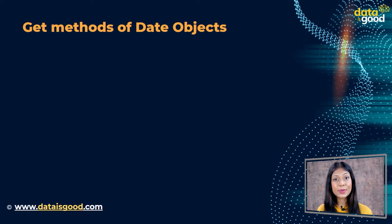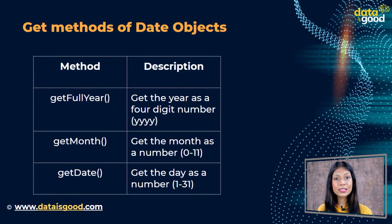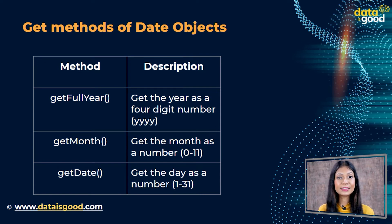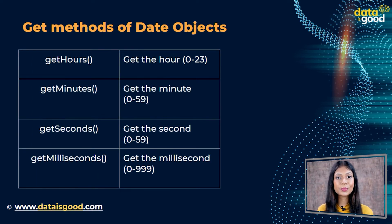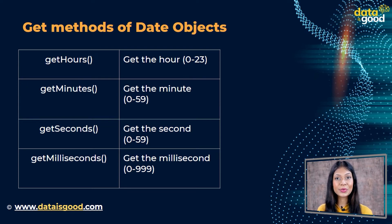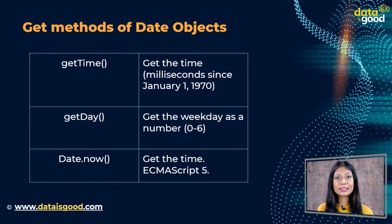The table contains some get methods of Date objects. getFullYear gets the year as a four-digit number (YYYY). getMonth gets the month as a number from zero to eleven. getDate gets the day as a number from one to thirty-one. getHours gets the hour from zero to twenty-three. getMinutes gets the minute from zero to fifty-nine. getSeconds gets the second from zero to fifty-nine. getMilliseconds gets the millisecond from zero to nine hundred ninety-nine.